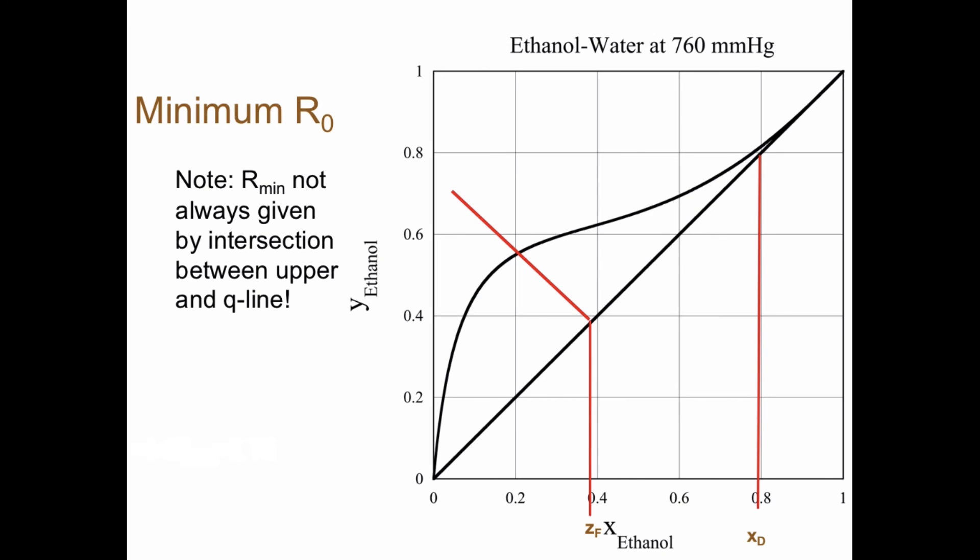Note here that the minimum reflux ratio is not always given by the intersection between the q line and the system curve. In this case here, you get a tangent here to the system curve and you can never pass that.